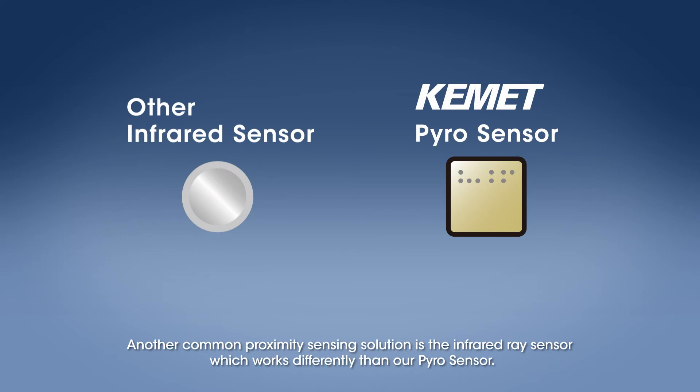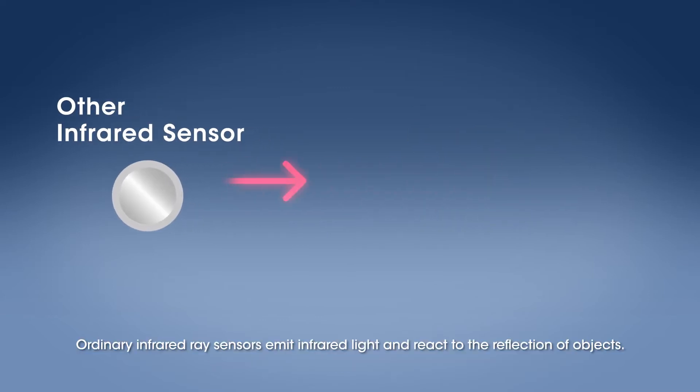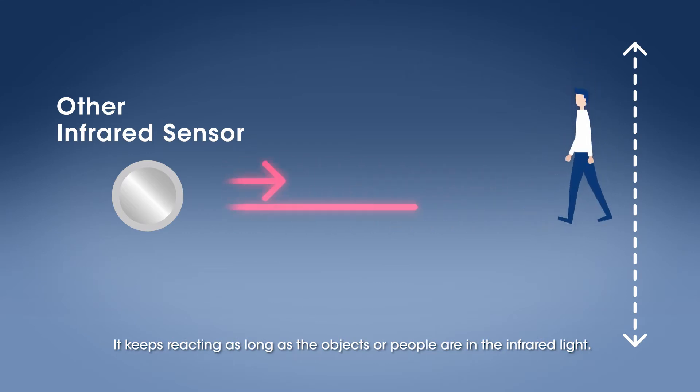Another common proximity sensing solution is the Infrared Ray Sensor, which works differently than our Pyro Sensor. Ordinary Infrared Ray Sensors emit infrared light and react to the reflection of objects. It keeps reacting as long as the objects or people are in the infrared light.